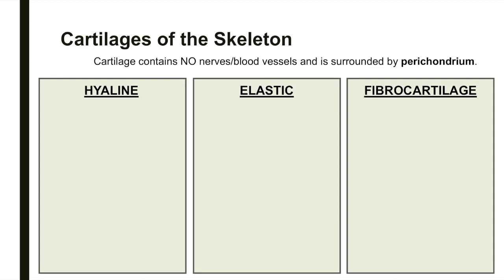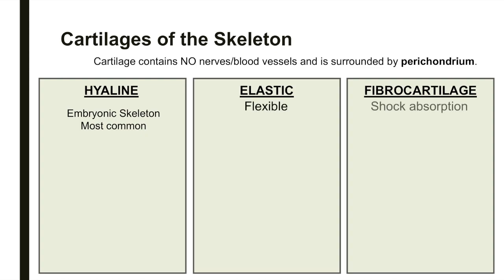Cartilage contains no nerves or blood vessels and is surrounded by a covering of dense irregular connective tissue, which acts to resist distortion of the cartilage. Hyaline cartilage is the most common type found in the body, whereas elastic cartilage is known for its flexibility. Fibrocartilage provides strength and shock absorption.